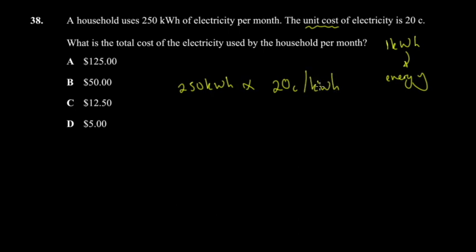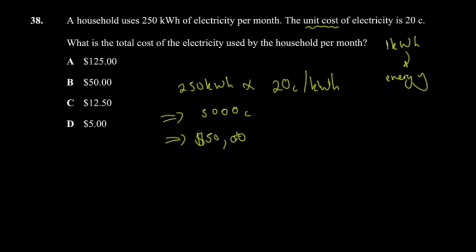The kilowatt-hour units cancel, leaving cents. 20 times 250 equals 5,000 cents. Since the answer is in cents, 5,000 cents equals $50. The important point is recognizing that the unit of electricity consumed in a household is kilowatt-hours, so 20 cents per unit means 20 cents per kilowatt-hour.